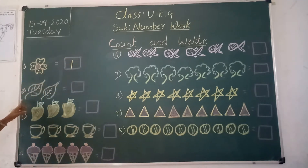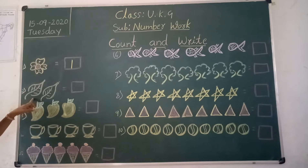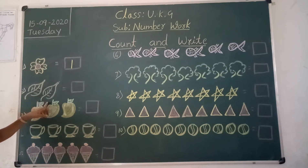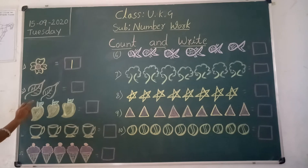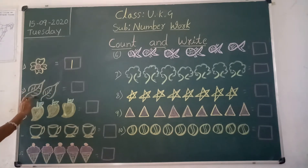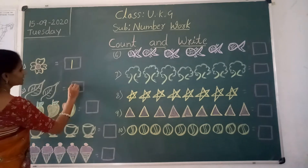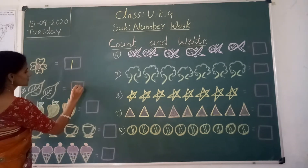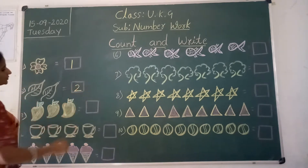Second one. See here, what is this picture? Leaves. How many leaves are there here? We will count, children: one, two. How many? Two. We have to write it in this box — two.